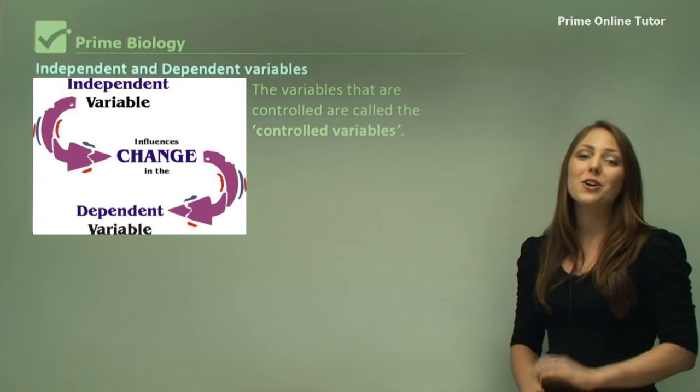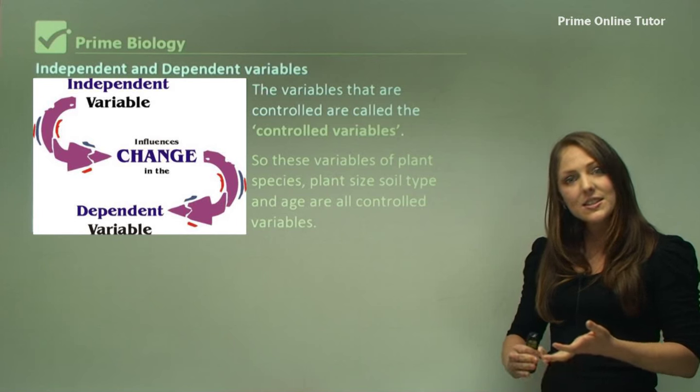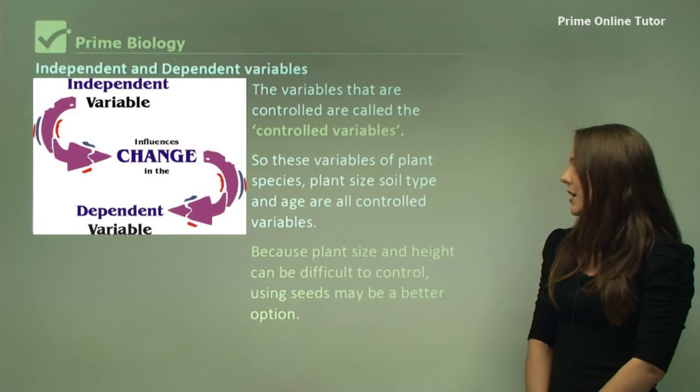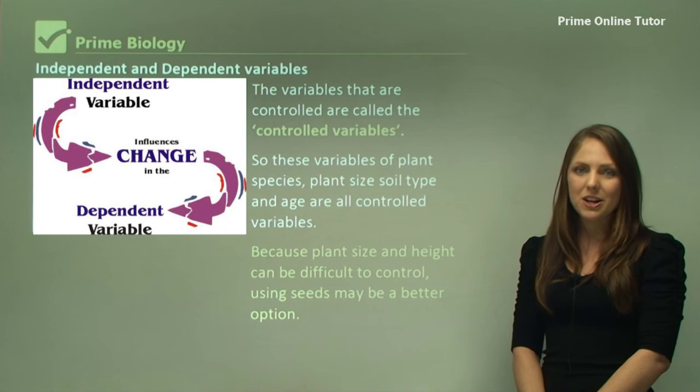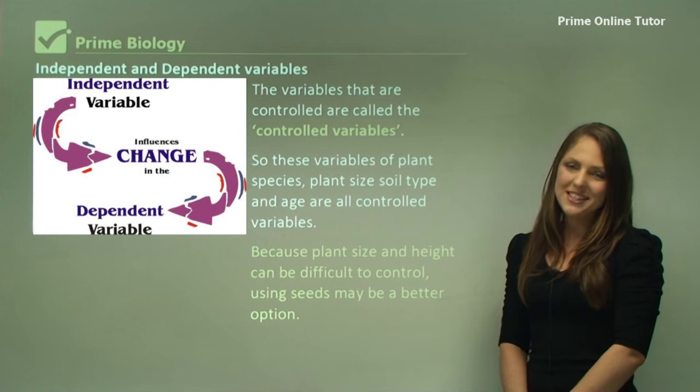The variables that are controlled are called the controlled variables. These variables such as plant species, the height, and the age are controlled variables. Because plant size and height can be difficult to measure and difficult to start with, seeds may be a better option to start with this experiment.